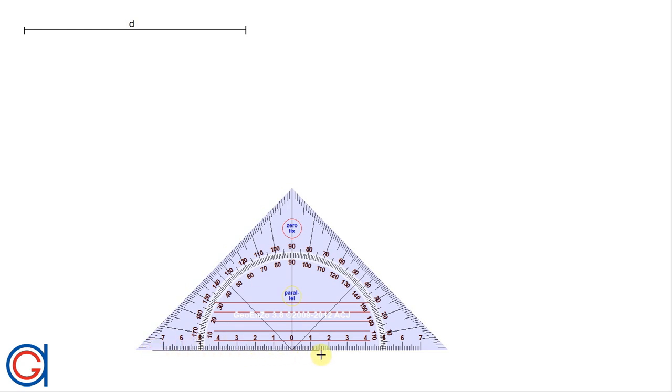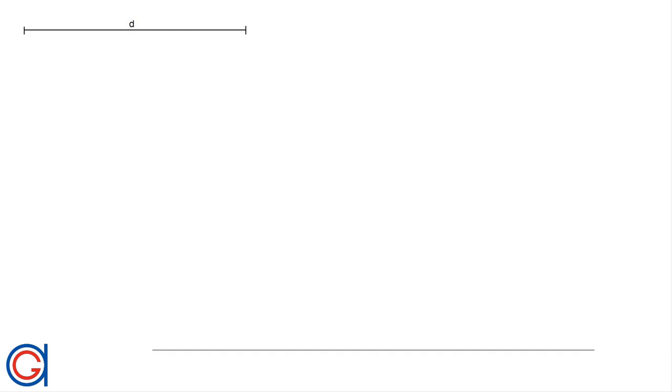So the first step we are going to do is to draw a horizontal line on the bottom of our screen. On the left side, we are going to mark a point P, which will be the first vertex of our square.